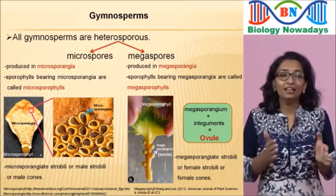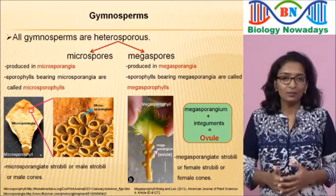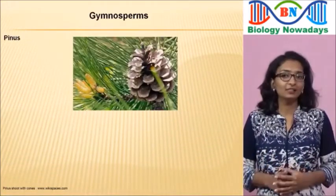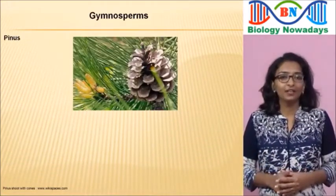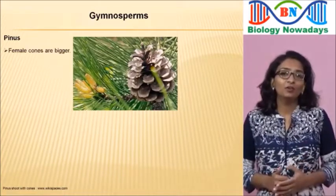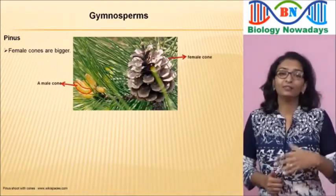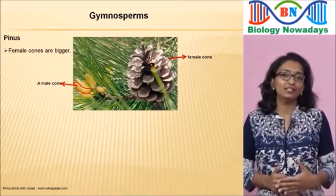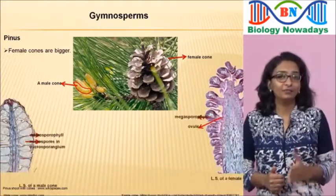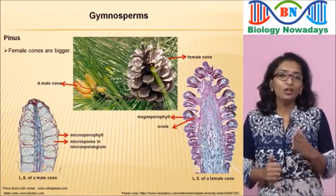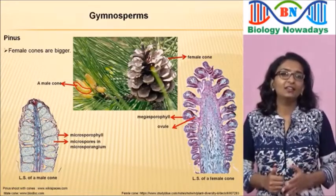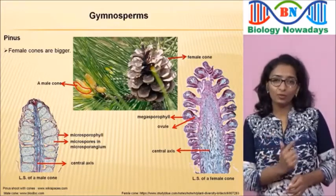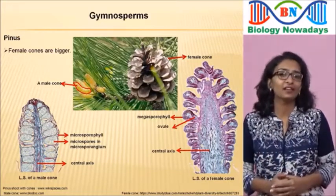The male and female strobili or cones may be present on the same tree, as in the case of Pinus. The female cone is bigger in size than the male cone. If you check a longitudinal section of the male and female cones of Pinus, you can see that the cones have a central axis around which microsporophylls or megasporophylls are arranged.